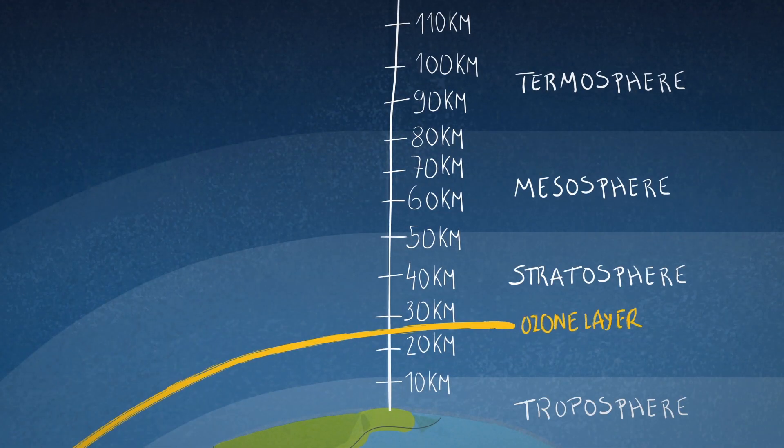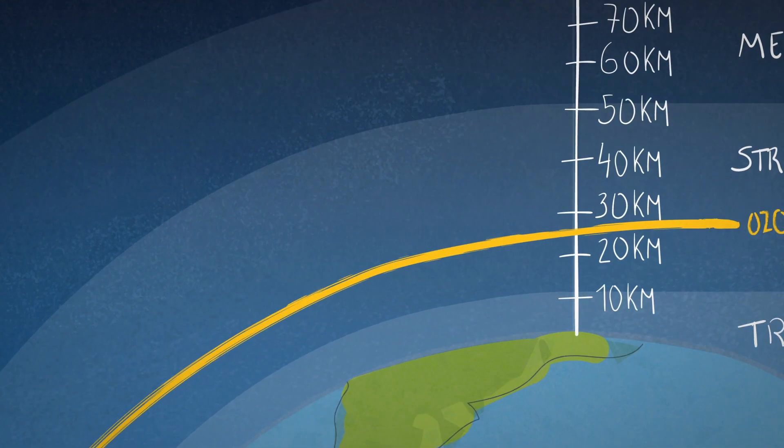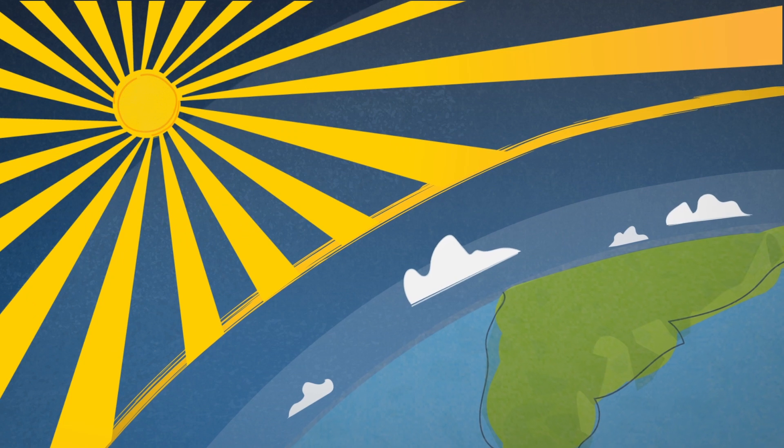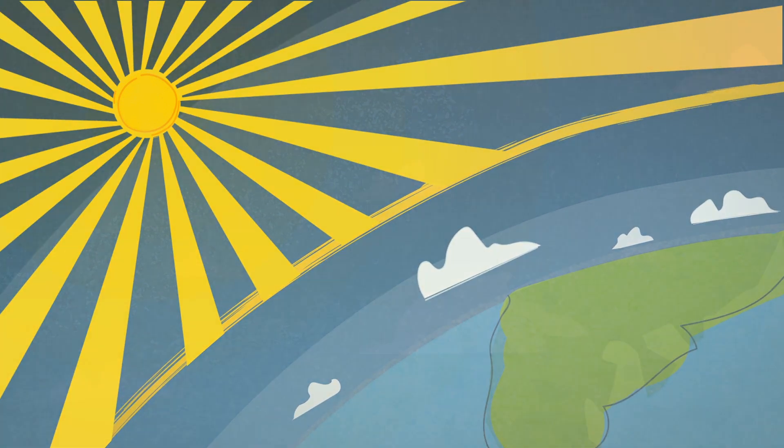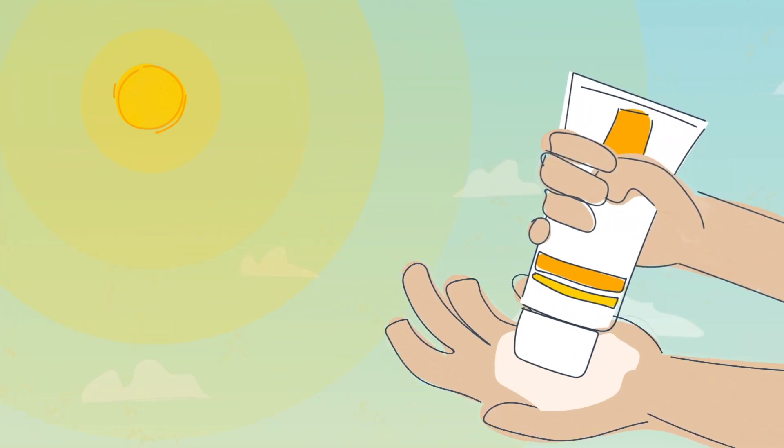The ozone layer lies in the stratosphere, where it acts as a shield to protect us against harmful UV radiation, which in excessive doses can increase your risk for a number of diseases, including skin cancer.